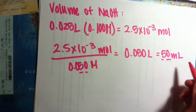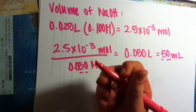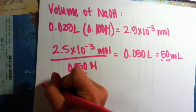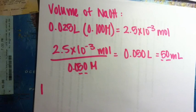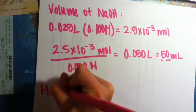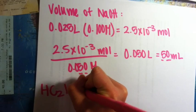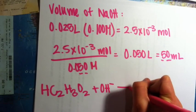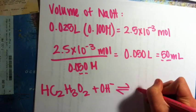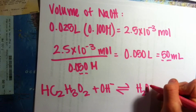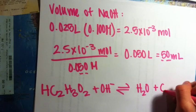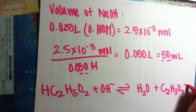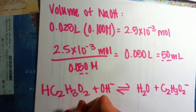There are two sig figs, so two sig figs. The neutralization equation that is occurring in this titration goes to completion.